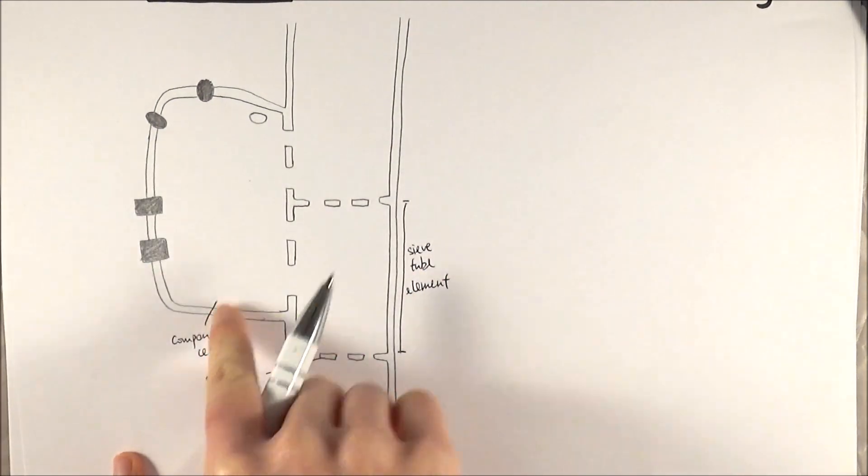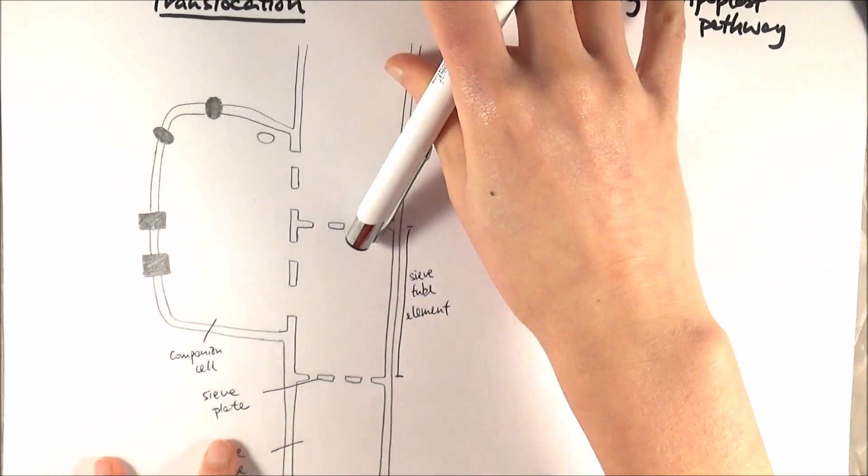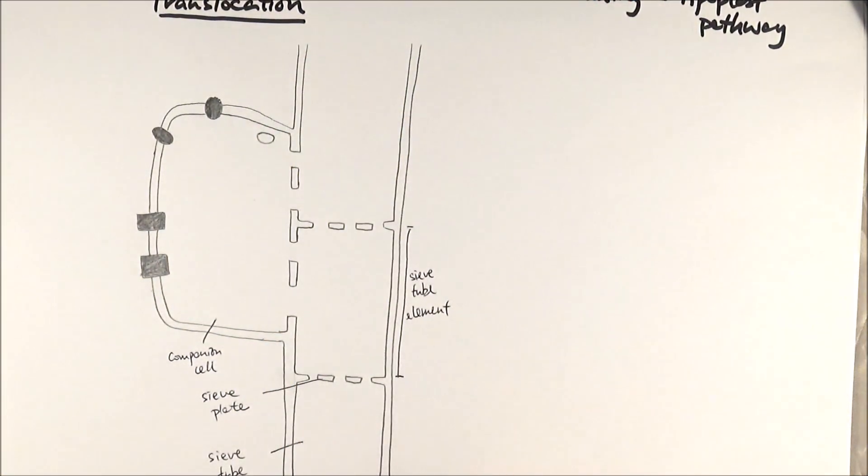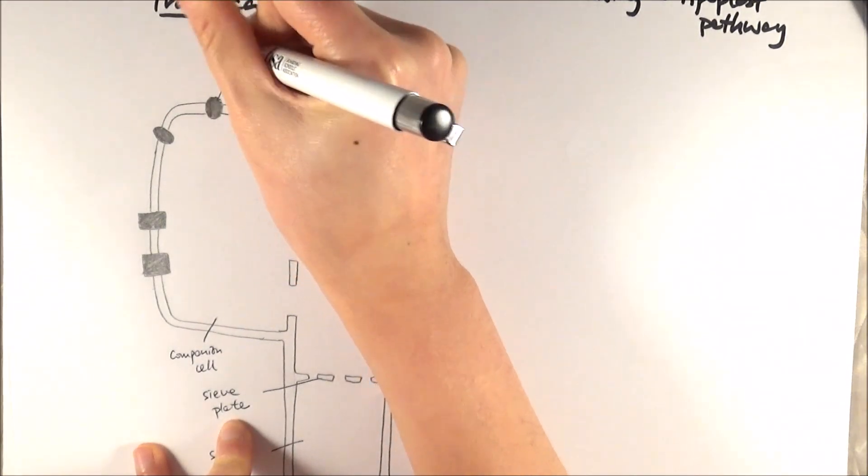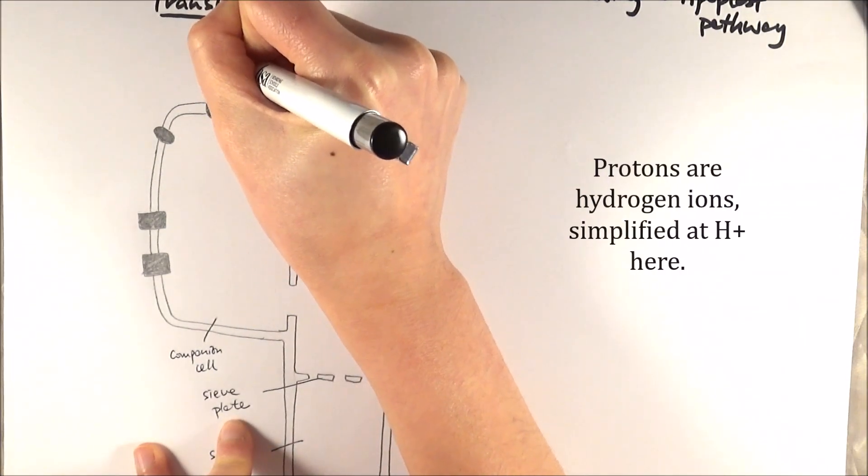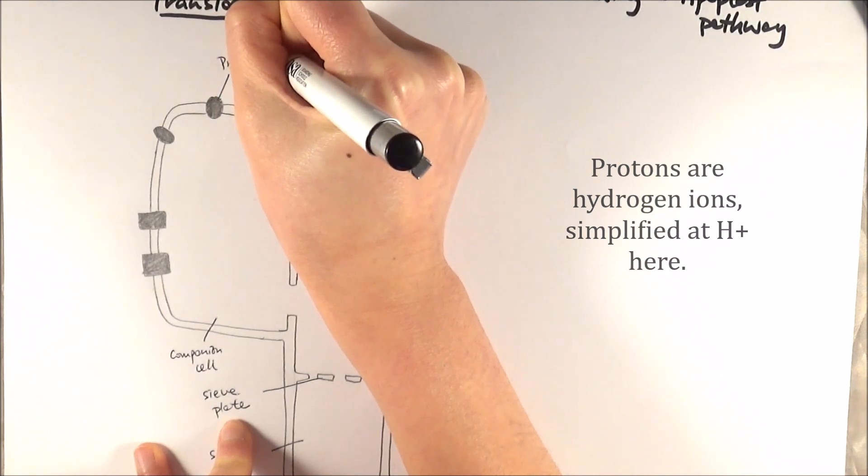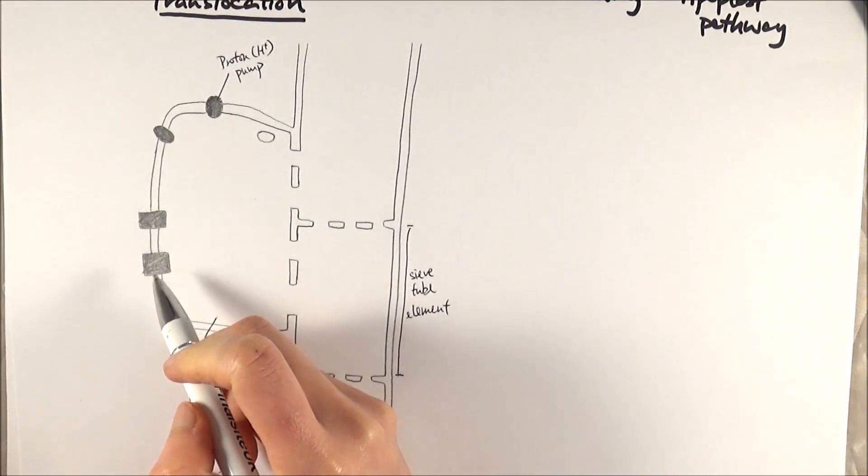A little bit more detail on the companion cell, which will make more sense as we go through the actual process. There are certain proteins you need to pay attention to. First of all, this is the proton pump. Also, we've got something called co-transporters.